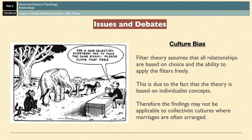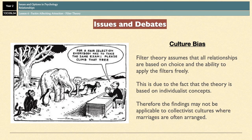A lot of research supporting Filter Theory uses participants from individualist cultures — that is, Western cultures — where free will with regard to relationship choice is valued and the choice of partners is described in terms of individual preferences. People in individualist cultures can easily apply the criteria described by Filter Theory without much influence from others. However, in many collectivist cultures it is quite common for romantic relationships to be arranged, meaning partners are not free to apply individual filters and select their own future spouse based on their own criteria. This means that Filter Theory suffers from culture bias, assuming that the rules of partner choice in Western cultures apply universally, which they don't.